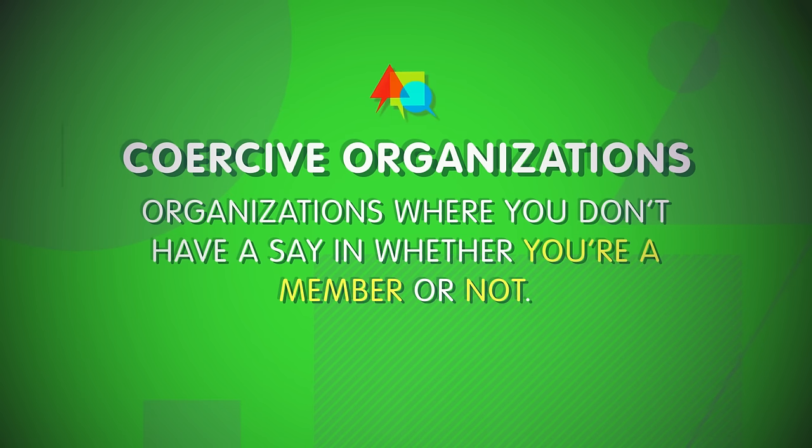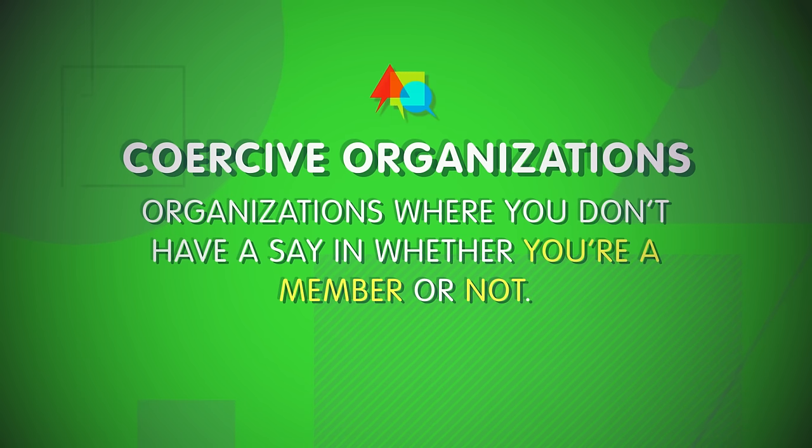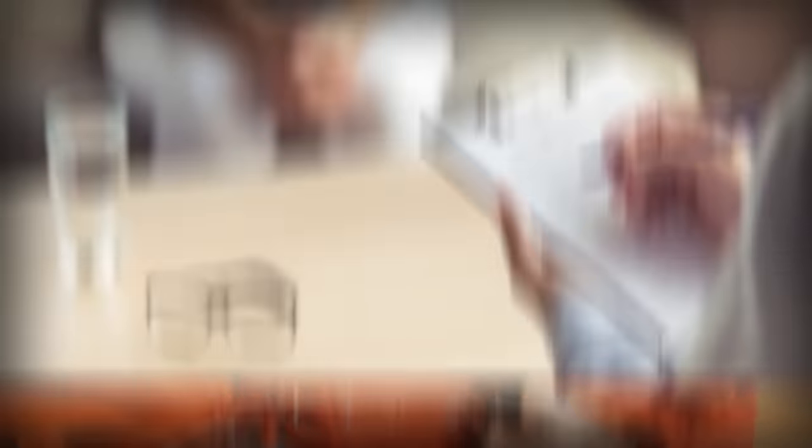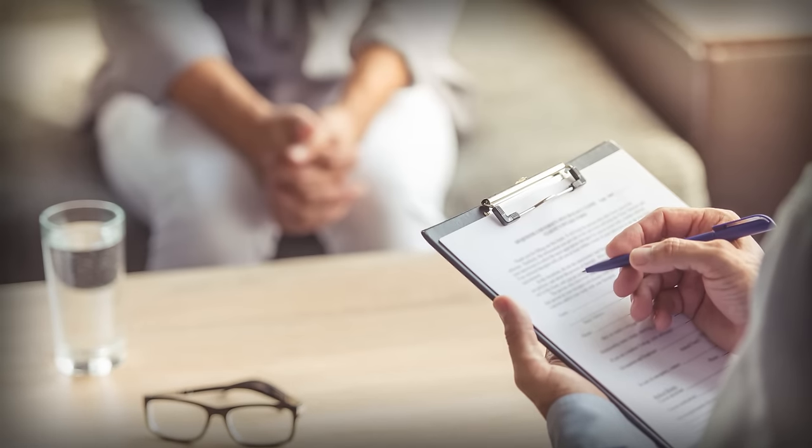Finally, coercive organizations are ones where you don't have a say in whether you're a member or not. People are coerced into joining these organizations, often as punishment — as in prisons — or treatment, say through involuntary commitment into a psychiatric hospital. These are all modern-day examples, but formal organizations have been around basically forever. They built the pyramids, they collected taxes across the Roman Empire, and they helped organize monasteries and convents.